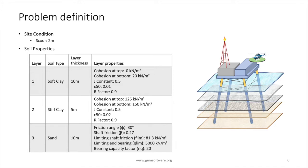We will use some typical soil properties shown here for each layer for the sake of this demo. These would normally come from the soil investigation report. We will use API 2011 as the method for axial and lateral analysis for each of the soil layers.